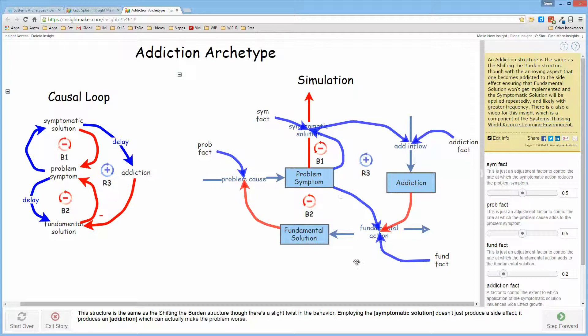The changes to the structure itself from the drifting goal structure, or from the shifting the burden structure, is that the fundamental action is now bidirectional so that the result of this action can add to the fundamental solution or subtract from it, and the fundamental solution can also go negative, meaning it just becomes more and more difficult to actually bring the fundamental solution into play. And we'll see that in a moment.